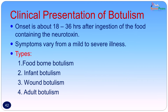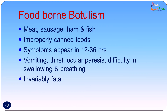The clinical presentation of botulism: onset is 18 to 36 hours after ingestion of food containing the neurotoxin, though it depends on the storage conditions. Symptoms vary from mild disease to severe illness. The most common type is food-borne botulism — as in this patient — but we can also get infant botulism, wound botulism, and adult botulism. Food-borne botulism is usually obtained from infected meat, sausages, ham, and fish, specifically improperly canned foods. Even vegetarian foods improperly canned can result in food-borne botulism. Symptoms appear within 12 to 36 hours — vomiting, thirst, ocular paralysis, difficulty in swallowing and breathing — and the disease can be fatal if not recognized and treated on time.